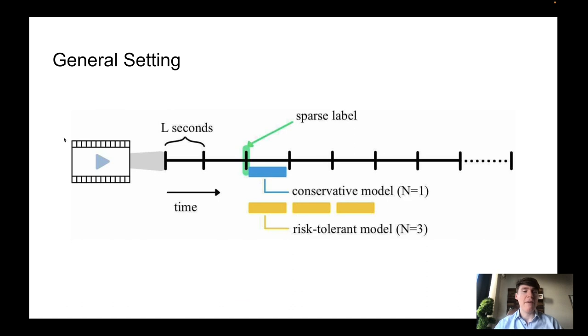The general setting is that you have a sequence of data, for example, a little video clip that has sparse labels. So for example, if you do event detection, you would just have the beginning of the event, but you won't have access to the end time.